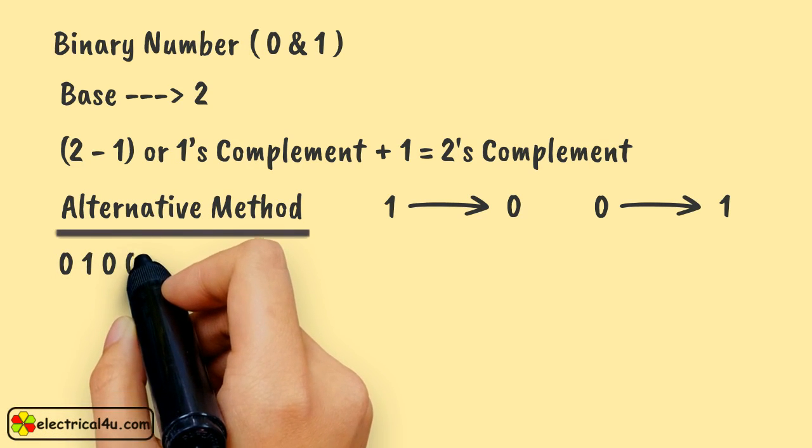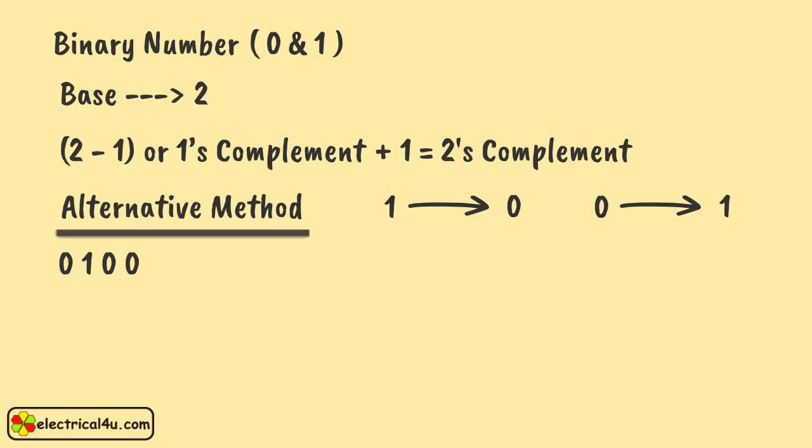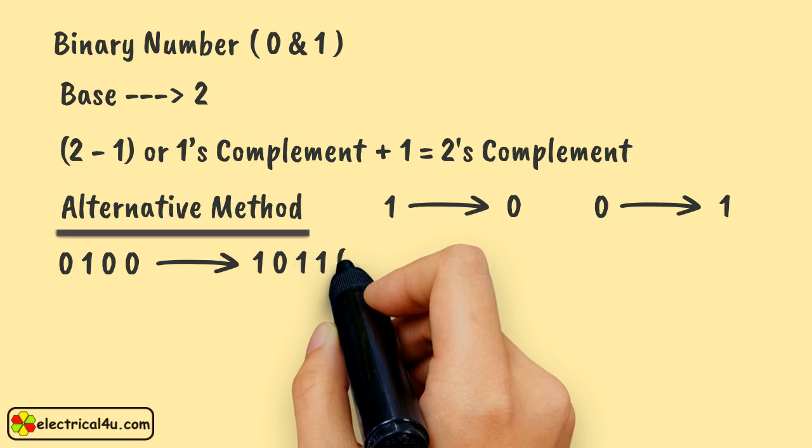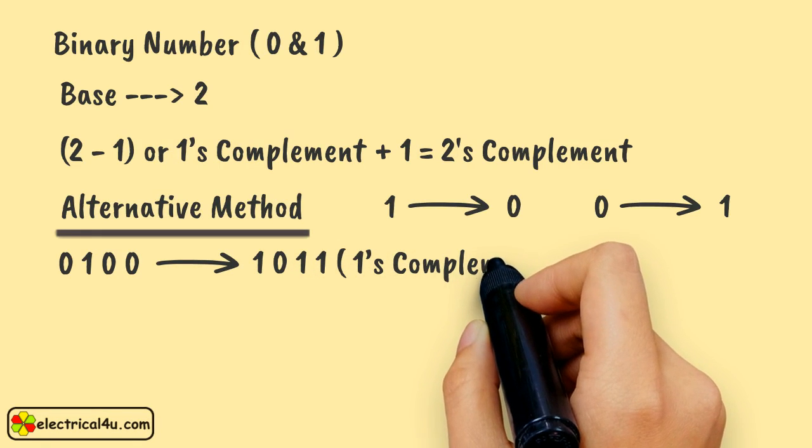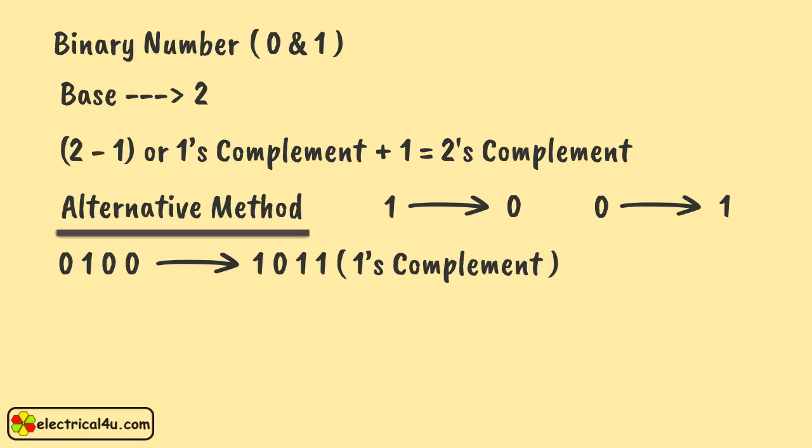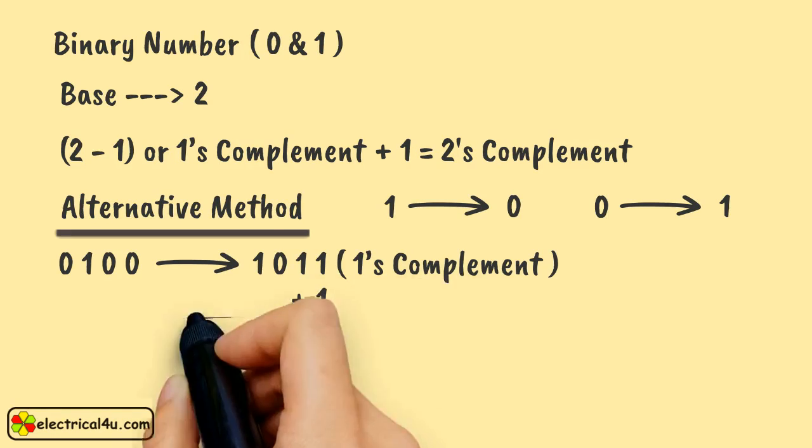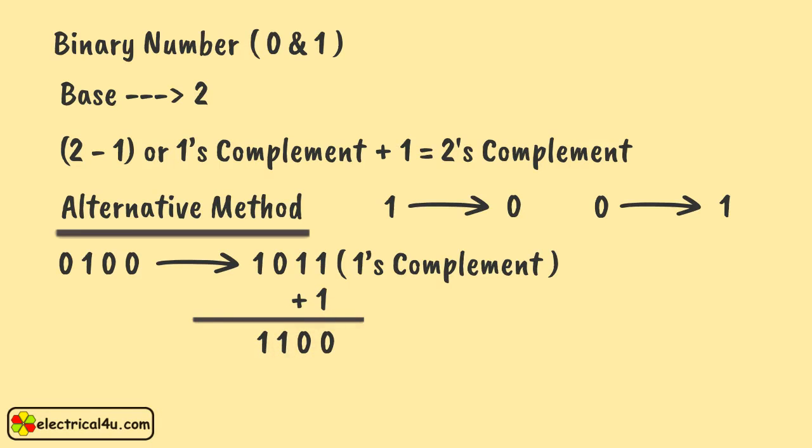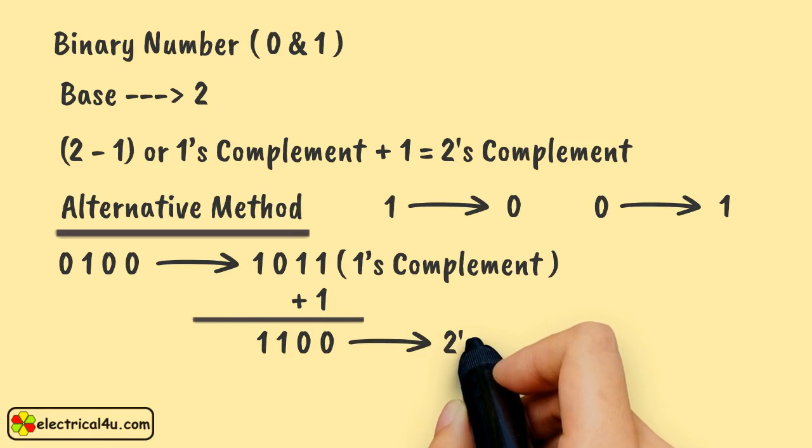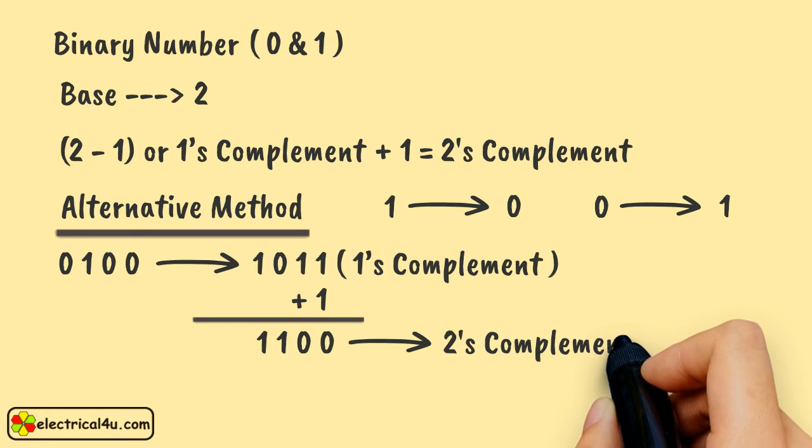For 0 1 0 0, we will have 1's complement just by replacing 1 by 0 and 0 by 1, and this will give the result 1 0 1 1. Adding 1 with that result will give us 1 0 1 1 plus 1, that is 1 1 0 0, and this is 2's complement of 0 1 0 0.